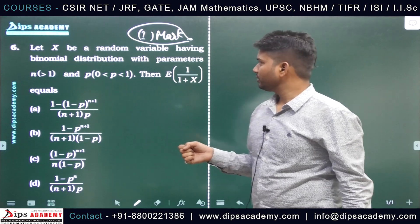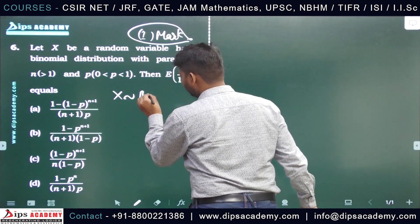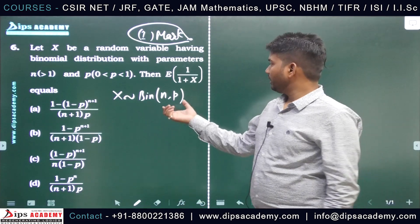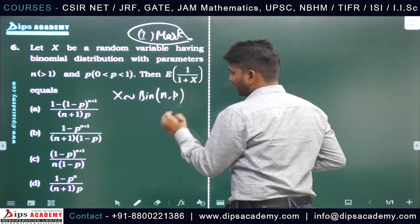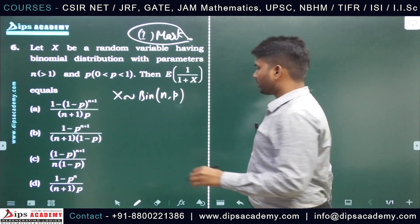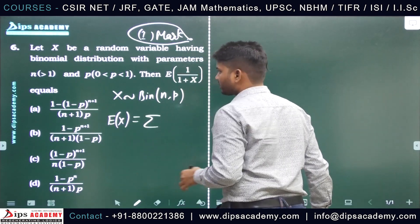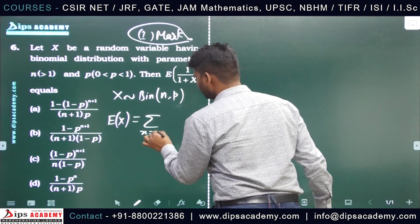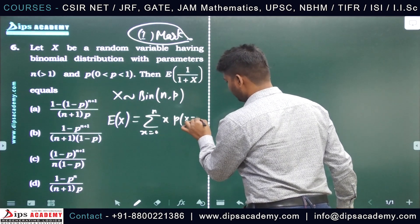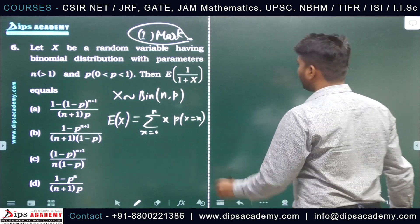We have X following binomial distribution with parameters n and p, and we have to find the expectation of 1/(1+X). We know that the expectation of X is given by the general formula for a discrete random variable: sum from x=0 to n of x times P(X=x).